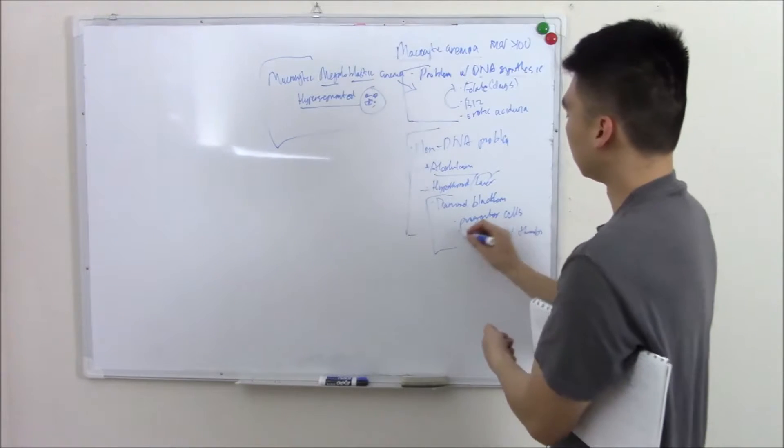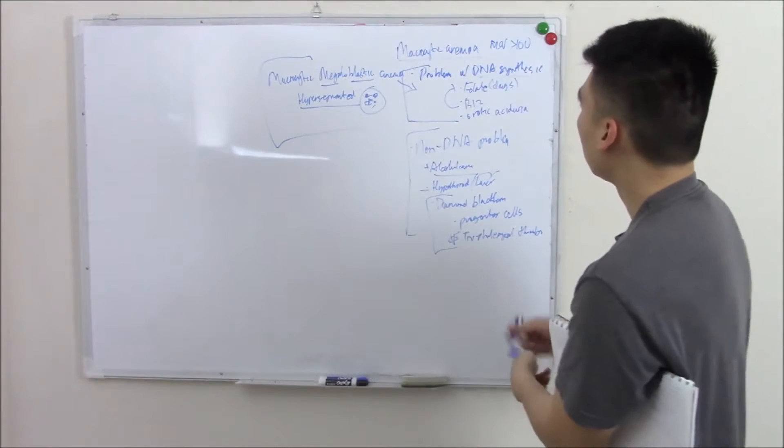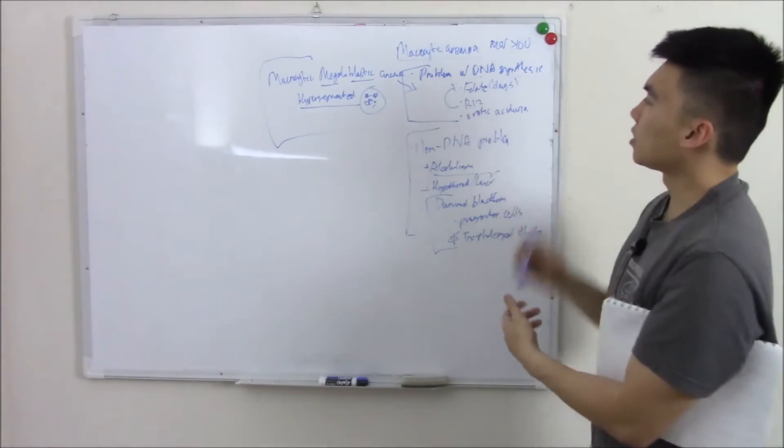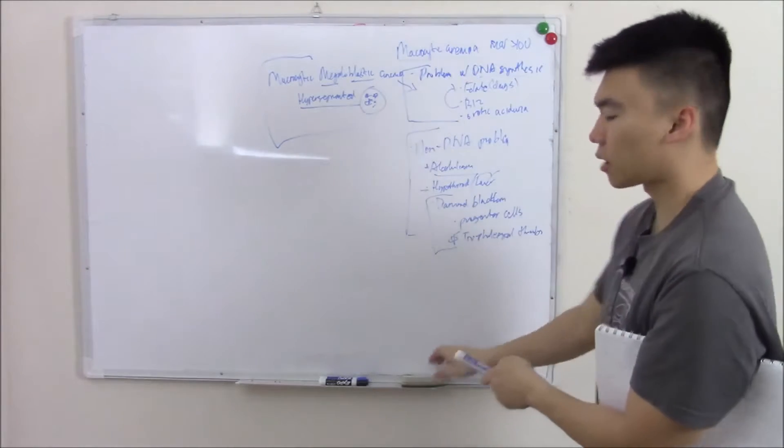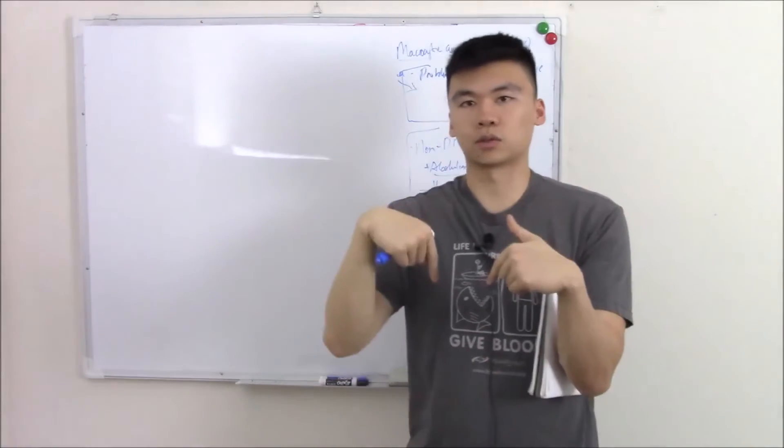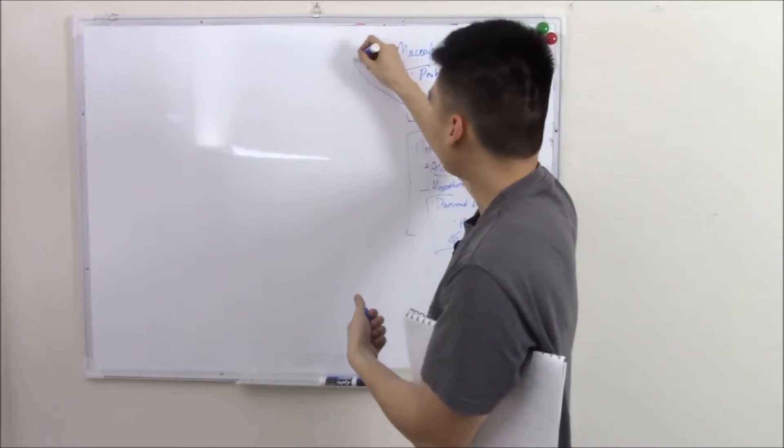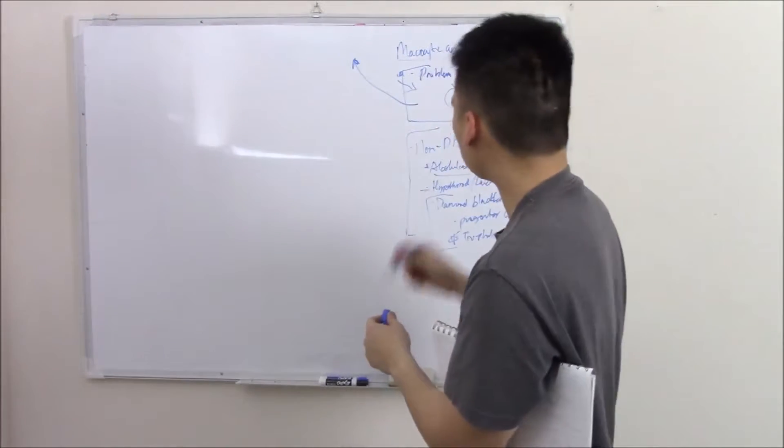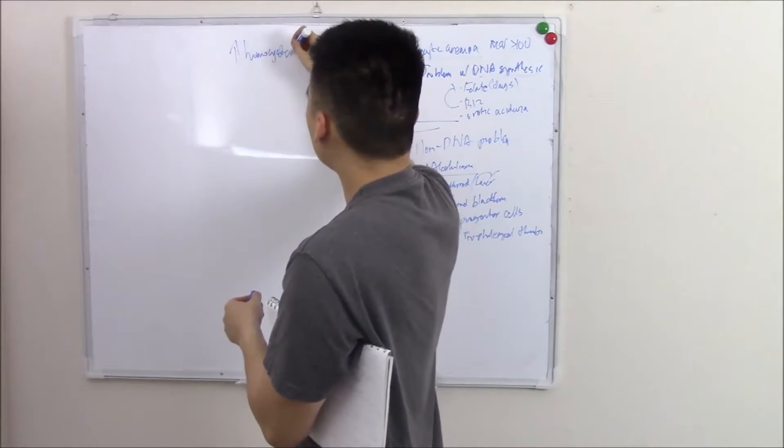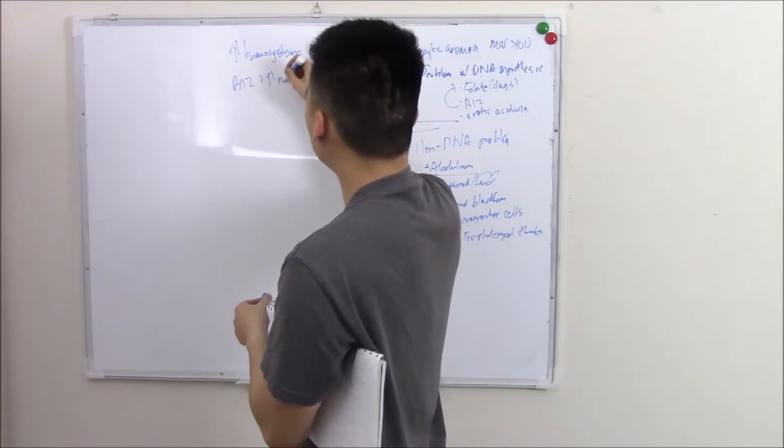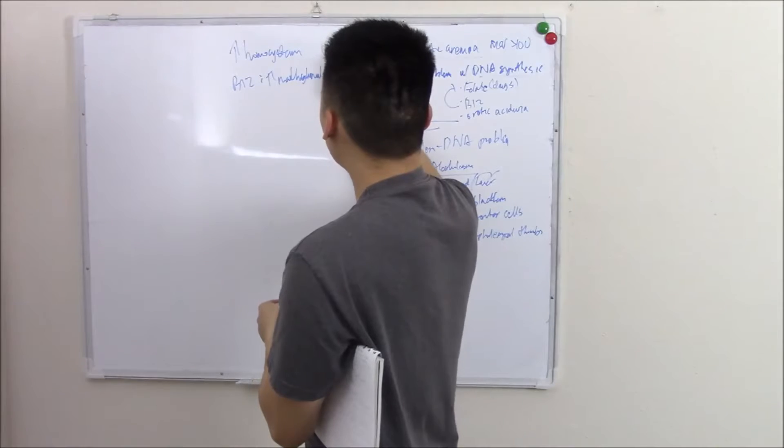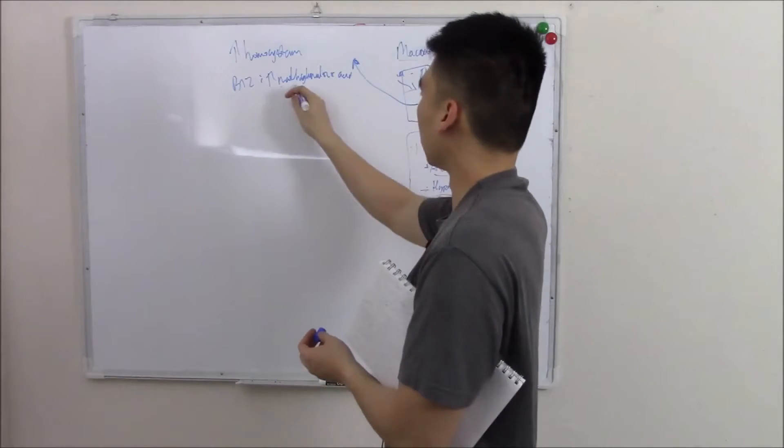So that is your non-DNA causes. Back to your DNA causes—we said folate, B12. I'm not gonna harp too much on it, I went in depth in my biochem video, I'll link it in the description. But just to recap on the lab findings: they both have elevated homocysteine, however only B12 has elevated methylmalonic acid. That's the dead giveaway. How to treat it? Give folate, B12.